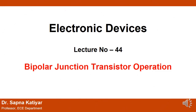Welcome to the video lecture series of Electronic Devices. Today's topic is Bipolar Junction Transistor Operation. In the previous video lecture, I discussed what is a Bipolar Junction Transistor (BJT), how many types of transistors are possible, what are the circuit symbols, how many modes of operations, how many configurations, and the biasing methods — the basic introduction about the BJT.